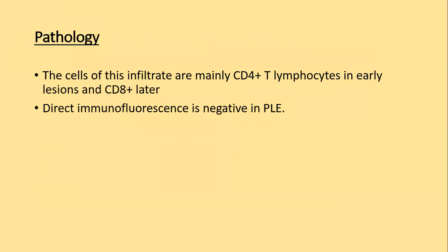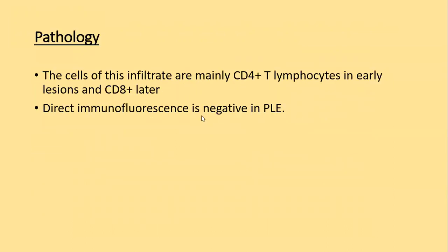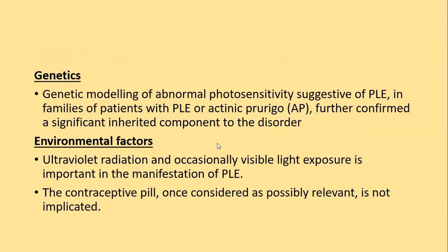The cells of this infiltrate are mainly CD4 helper cells and later CD8 suppressor cells. Direct immunofluorescence findings are negative in polymorphic light eruption. This is helpful in distinguishing lupus erythematosus from PLE, in which the lupus band test will be positive, whereas it is negative in PLE.